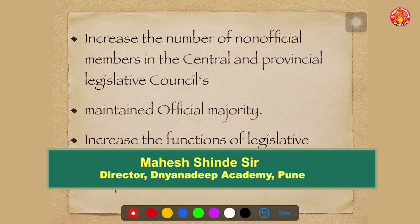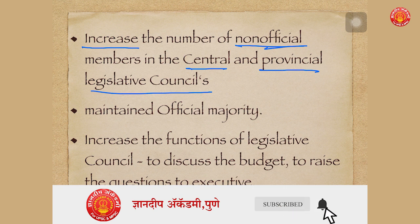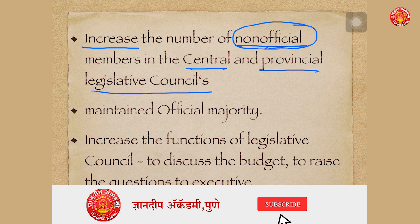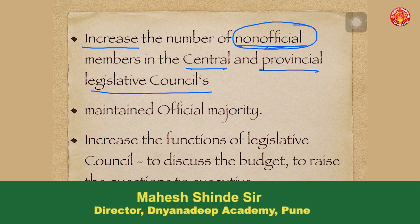The Indian Councils Act of 1892 increased the number of non-official members in the central as well as provincial legislative councils. Non-official members are Indians who are associated with legislative councils of the Viceroy in the centre and governors in the provinces. This act says the governor and Viceroy should nominate more Indians, expanding their legislative councils and giving them more legislative functions.